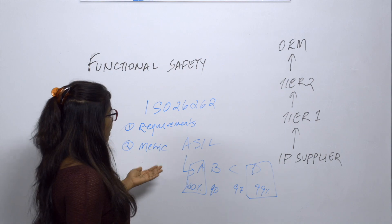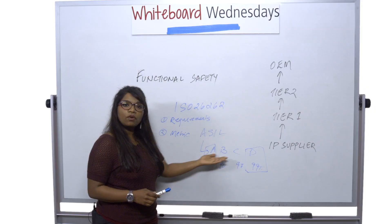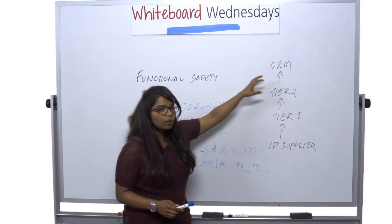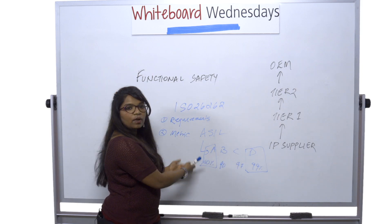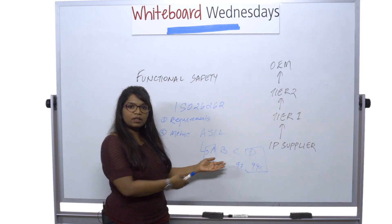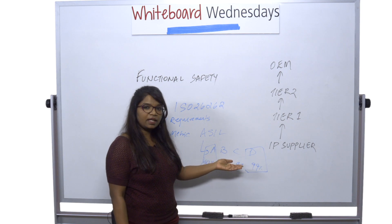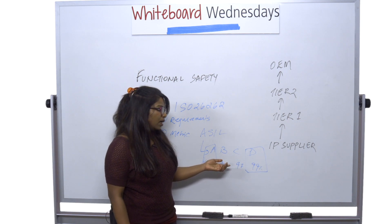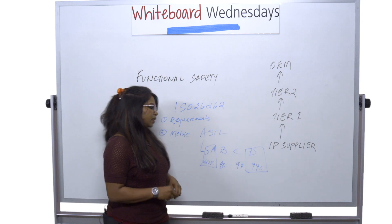So now the standard gives you these four categories in which based on where you fit in you develop your activities based on all the standard provides you the required procedures that are necessary to create your safety product. The standard also tells you what are called work products.